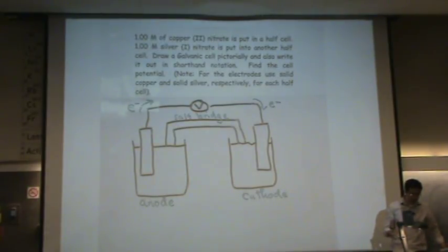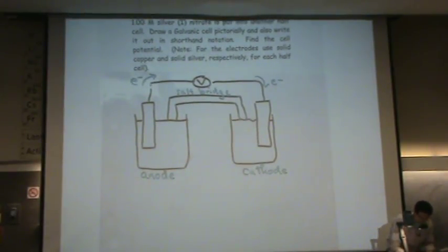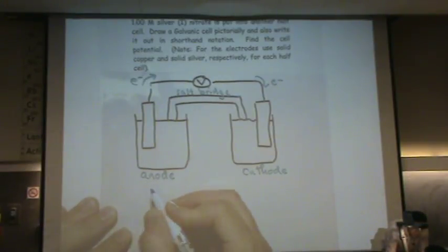So now what we can do is fill in the blanks. Let me get a different color and we'll write down the reactions. We have copper nitrate and silver nitrate. So copper nitrate, that's just copper two plus.